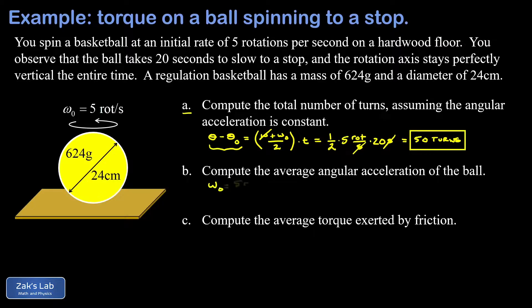That's not such a big deal. We start with 5 rotations per second and then we just multiply by a conversion factor: 2π radians for every rotation. The rotations cancel out and this gives us 10π radians per second, or about 31.4 radians per second for our initial velocity.